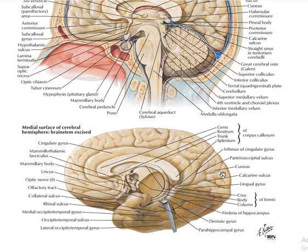The cingulate gyrus also consists of different parts. The part going posteriorly is called the isthmus of the cingulate gyrus. At this posterior portion, we have a sulcus called the calcarine sulcus. There is another sulcus which separates the parietal lobe from the occipital lobe, called the parieto-occipital sulcus.